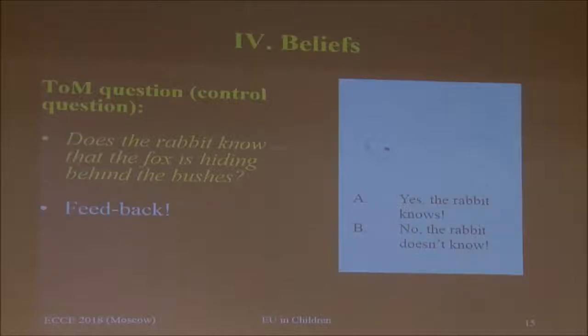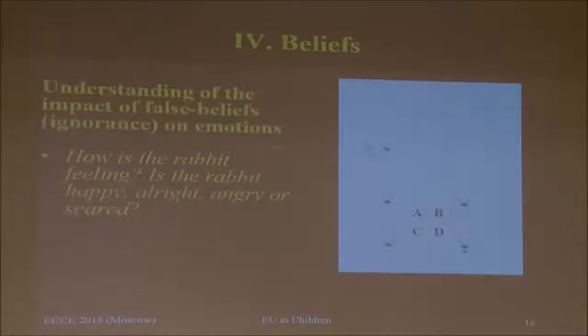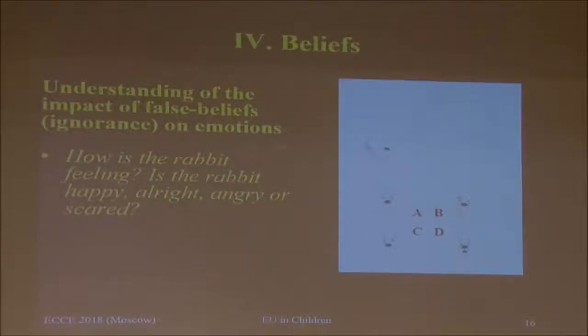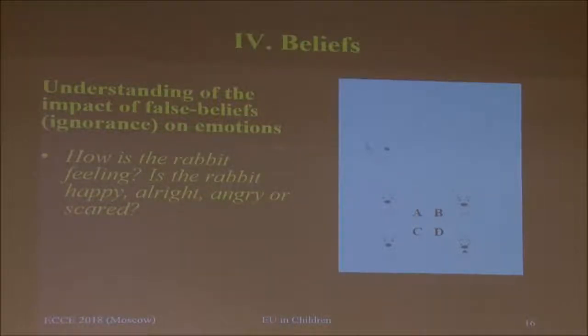From the age of four or five, the majority of children understand the false belief of the rabbit. But when you then ask them how the rabbit is feeling — happy, angry, or scared — although the majority of children at age four or five say the rabbit doesn't know the fox is hiding, they still say the rabbit is scared. It's not until age six or seven that the majority of children recognize the impact of the rabbit's false belief on its emotional experience.